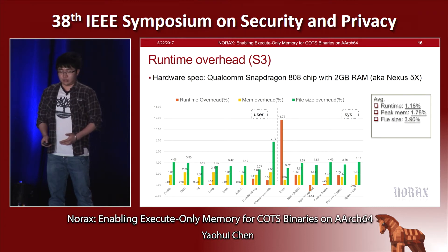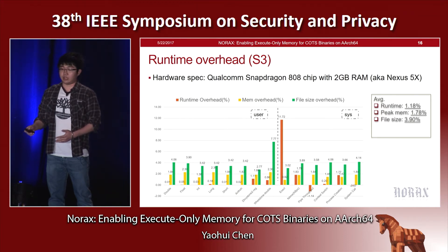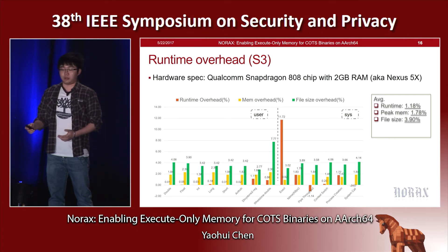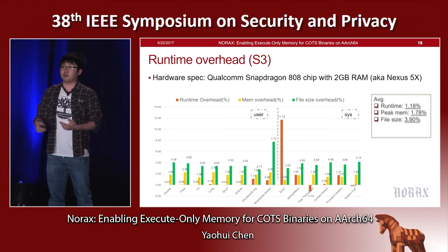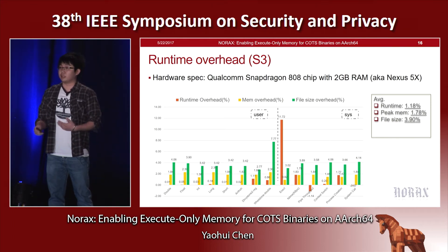One benchmark — EXEC-CL — showed much higher runtime overhead because it performs stress testing on the exec syscall, continuously calling exec on itself. This keeps triggering our bookkeeping data setup and the locking-unlocking mechanism, which explains the higher overhead for that specific benchmark.